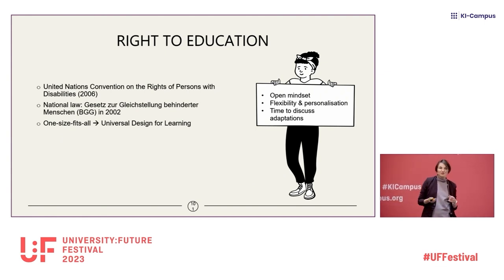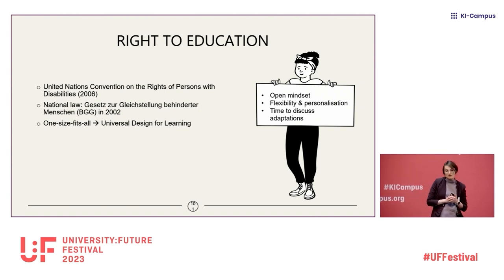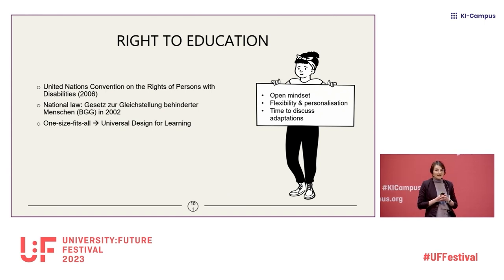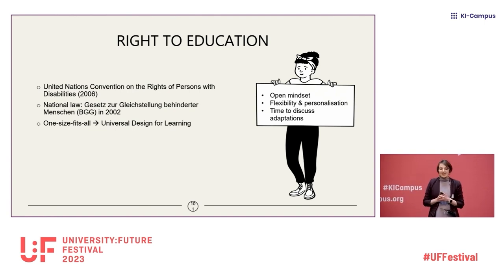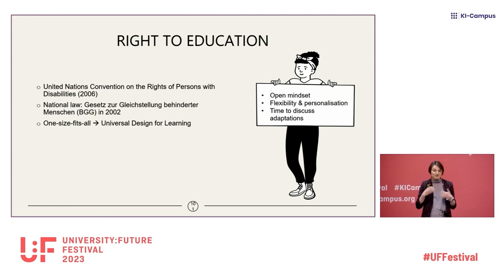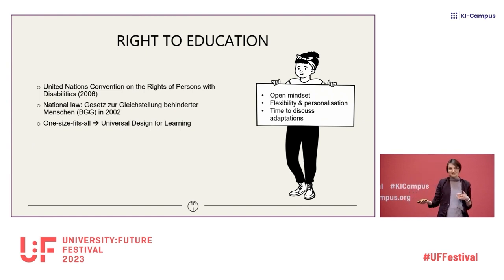It is important to remind you that there is a right to education for students with disabilities, both in international law. The United Nations Convention on the Rights of Persons with Disabilities was adopted in 2006. Germany signed it in 2007 and it entered into force in 2009 — actually earlier than in Switzerland, where it entered into force five years later. That convention clearly states that students should have fair access to higher education. There is also national law guaranteeing these rights. In Germany it is the Gesetz zur Gleichstellung Behinderter Menschen, adopted in 2002 and since updated.